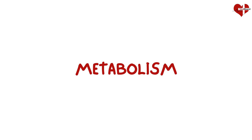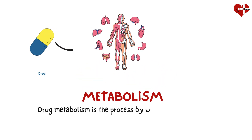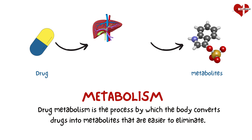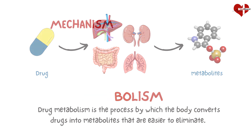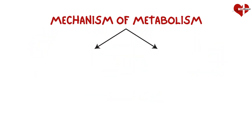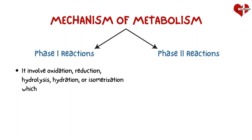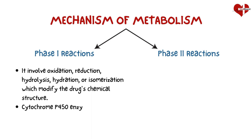Drug metabolism is the process by which the body converts drugs into metabolites that are easier to eliminate. This process primarily occurs in the liver but can also take place in other organs such as the kidneys, lungs, and intestinal tract. Metabolism can include two phases: phase 1 reactions, which involve oxidation, reduction, hydrolysis, hydration, or isomerization to modify the drug's chemical structure, with cytochrome P450 enzymes playing a crucial role.